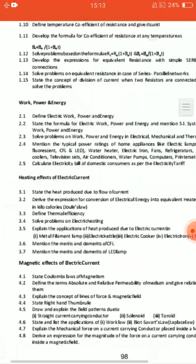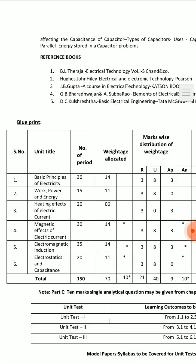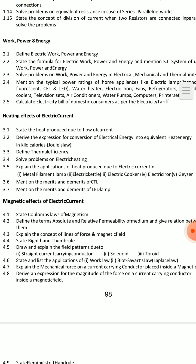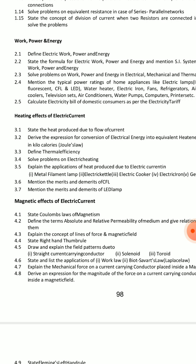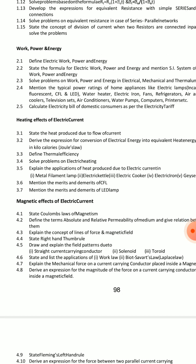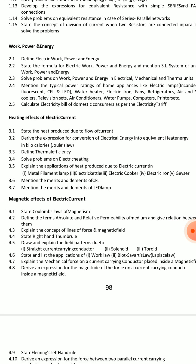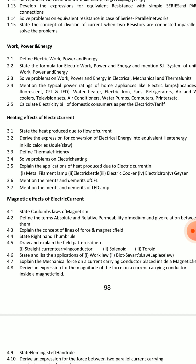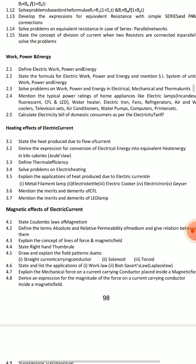Heating Effects of Electric Current — only short answers are required here per the blueprint. This lesson has about 7 questions including merits, demerits, and problems. Key shorts to cover: state the heat produced due to flow of current (3 points), define thermal efficiency (3 points), merits and demerits of CFL lamp (3 points), and merits and demerits of LED lamp (3 points).